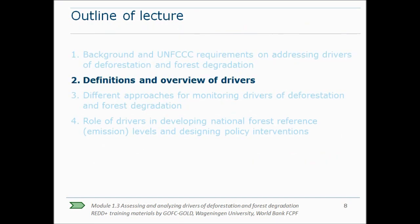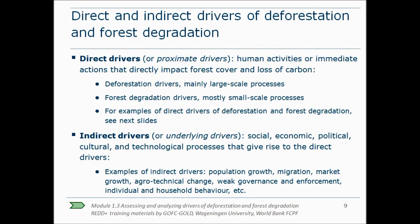Now let's move on to the different types and definitions of drivers. In literature, there is often a distinction made between direct and indirect drivers. Direct drivers are human activities that directly affect forest cover, such as forests converted to agriculture or for settlements or mines. Indirect drivers, on the other hand, are the social, economical, political, cultural and technological processes that influence the direct human activities — think about population growth, migration, weak governance, and so on.